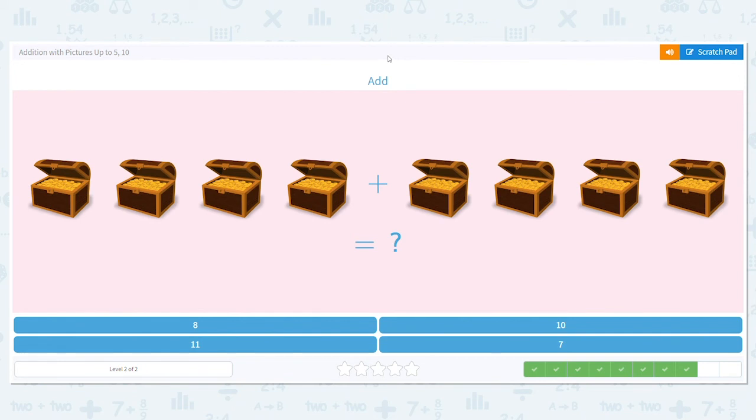Next one. We have treasure chests. So I have 4 on this side. And I have 4 on this side. So we're doing 4 plus 4. What is 4 plus 4?